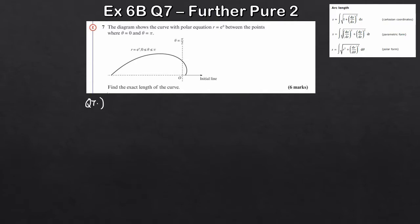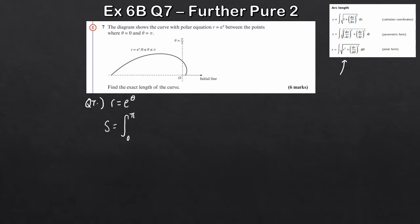We've got R equals e to the theta. We're between the points 0 to pi. So in this case, our limits — we're using the bottom formula here because we're in polar form. So we're using S equals the integral. Sometimes you'll see these limits defined as alpha and beta. In this case, alpha and beta are just 0 and pi, because that's what we're working between. So that's your alpha, that's your beta.